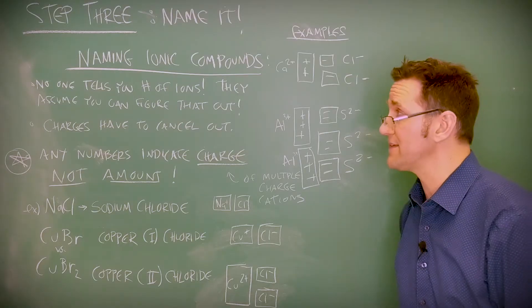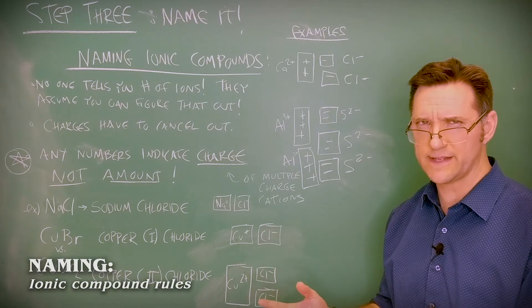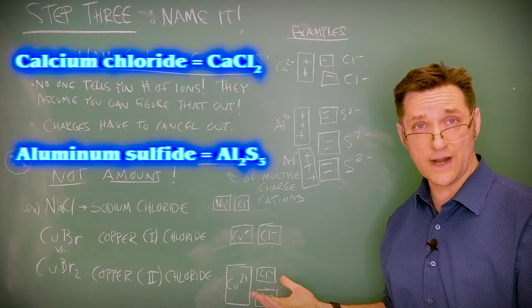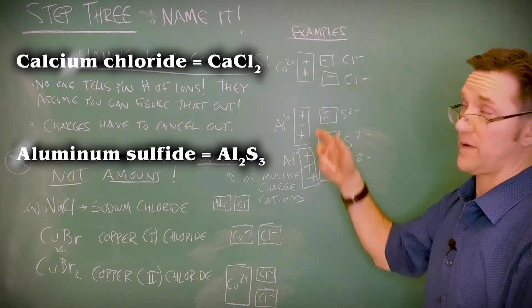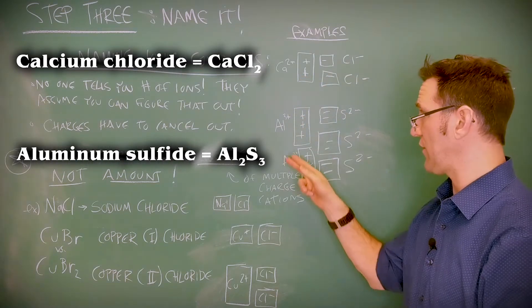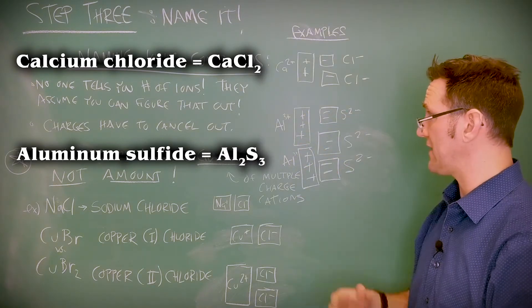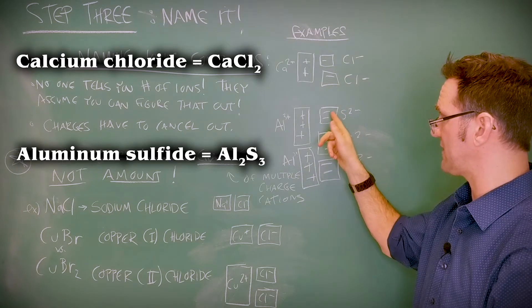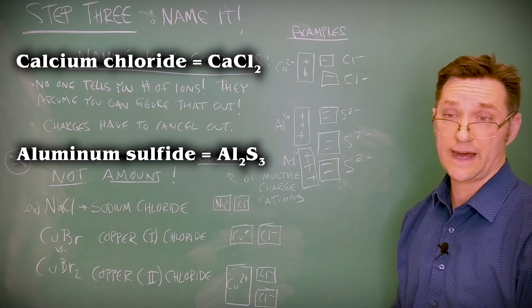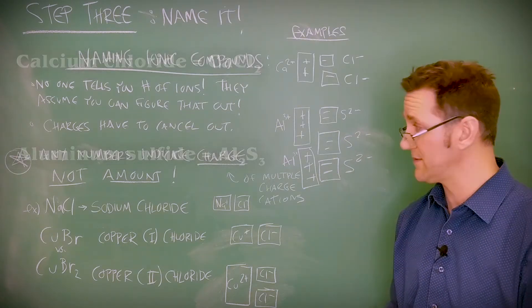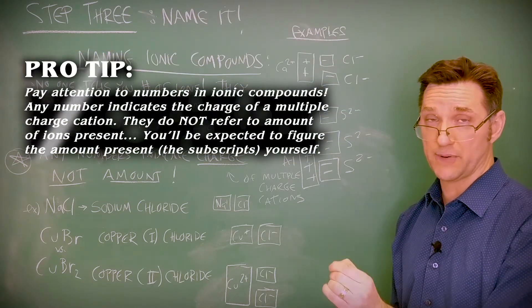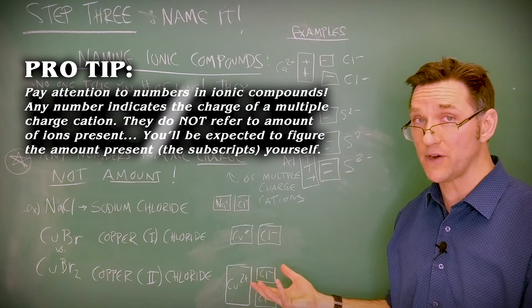Now, let's name ionic compounds. With ionic compounds, I simply tell you what ions are present, and then you figure out the formula. I never tell you subscripts. So if I said calcium chloride, it's up to you to realize that calcium has a plus two charge. Chloride has a minus one charge, and so I'll need two chlorides to balance out the calcium. Remember, any numbers in an ionic compound indicate the charge of a multiple charge cation present.